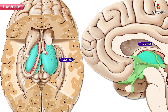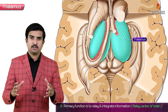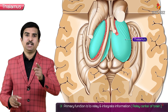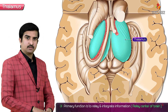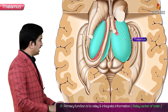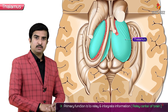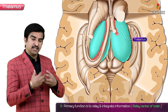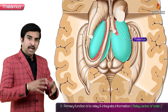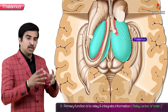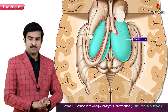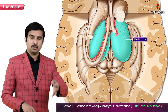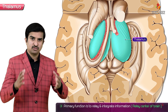Compared to all four structures, the thalamus has the primary function of relaying and integrating information. Whatever sensory inputs are received by the thalamic nuclei, those nuclei not only receive the information — integration and processing also occur at the thalamic area. That is why the thalamus is called the relay center of the brain, or relay center of the central nervous system.